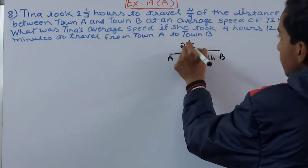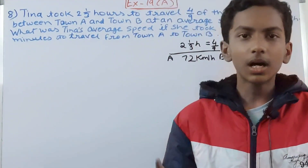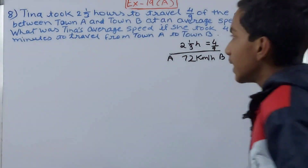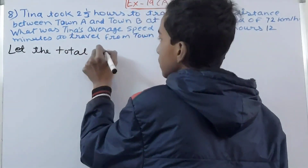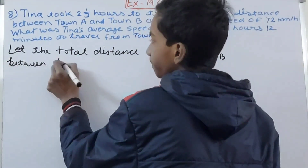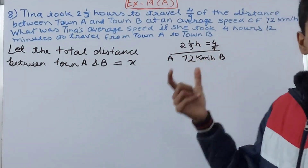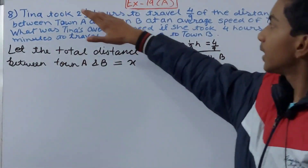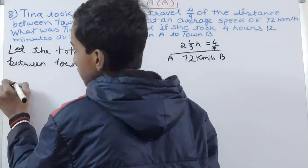The time she takes is 2 and 1/3 hours, and in this time she covers 4/9 of the total distance — not the complete distance from Town A to Town B, but 4/9 of it. So first of all, I'll assume the total distance as x. Let the total distance between Town A and B be equal to x kilometers. This is what we'll be finding first.